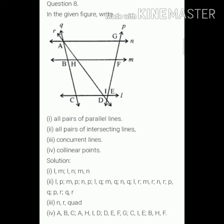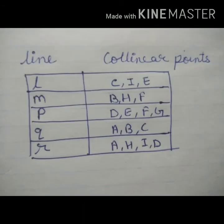Part four is collinear points. So first write the lines and then we write their collinear points. So C, I, E are the collinear points on line L.